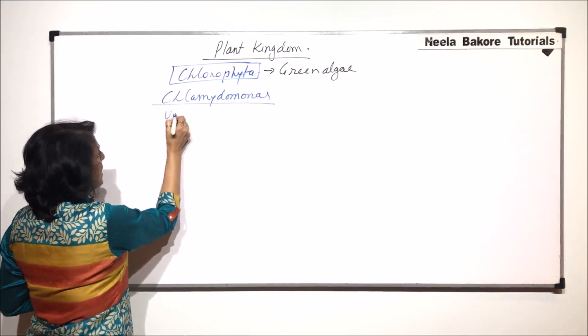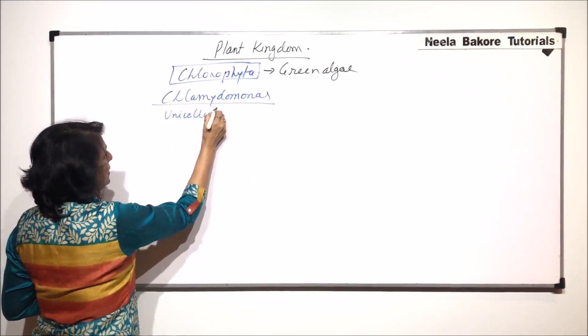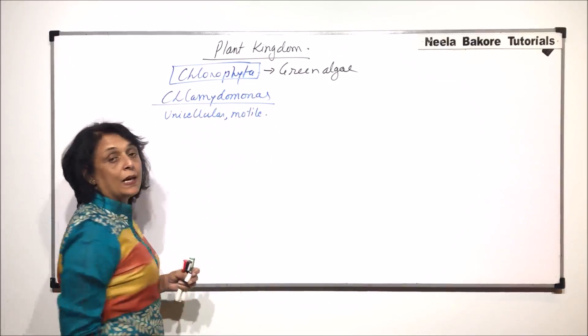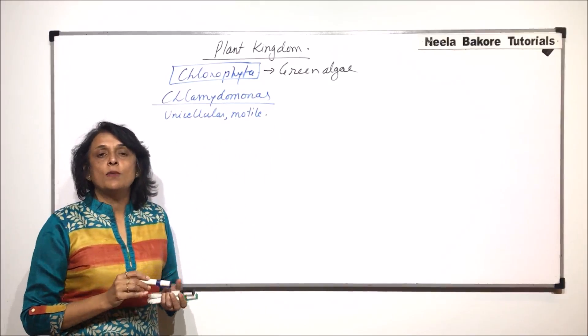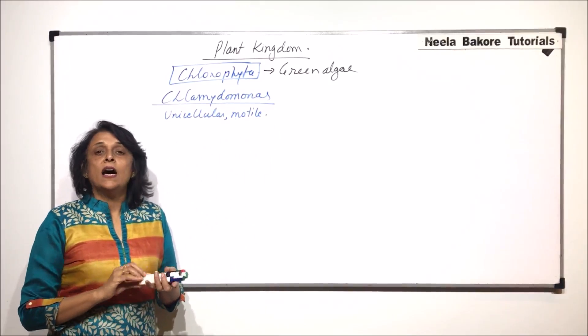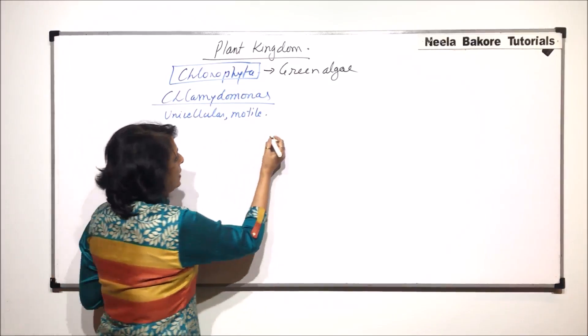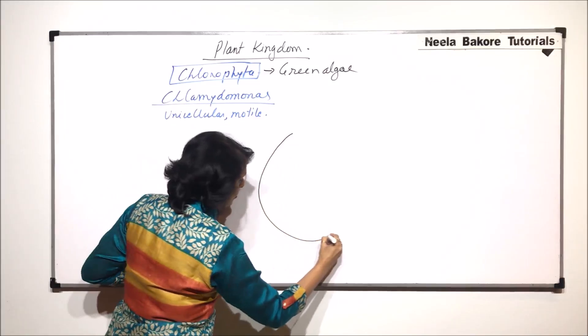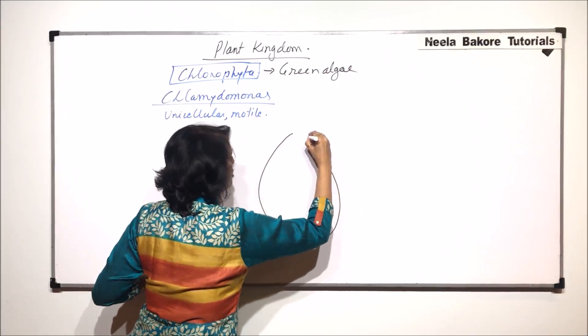Chlamidomonas is a unicellular motile green alga. The shape is normally ovoid or a droplet like. So we will draw the most common shape which is like a droplet.